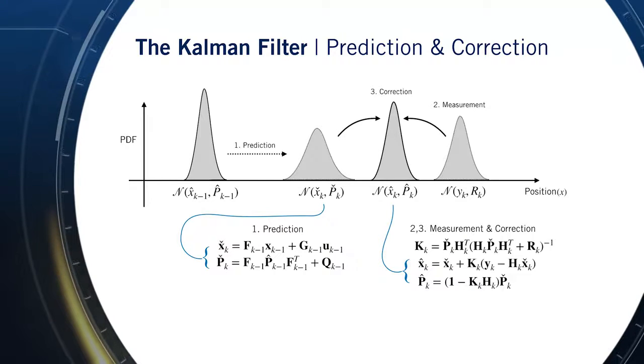Finally, using our probabilistic measurement model, we correct our initial prediction by optimally fusing the information from our measurement, together with the prior prediction through our optimal gain matrix K. Our end result is an updated probabilistic estimate for our states at time step k.